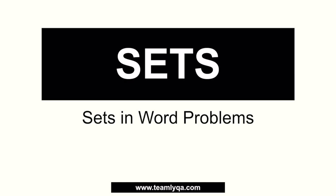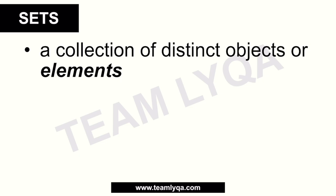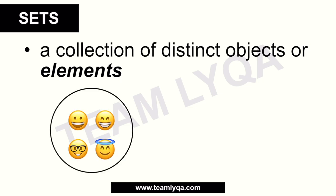If you haven't seen the other videos yet, go back to our first lesson — the introduction to sets. We talked about how sets are collections of distinct objects or elements. For example, if you have a set of emojis with four items, you have four elements in that set. That count is called the cardinality of the set.